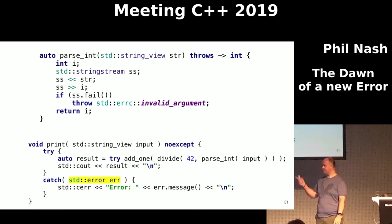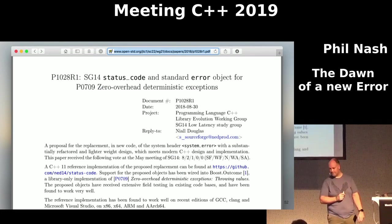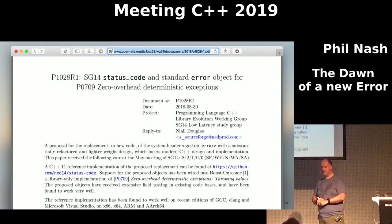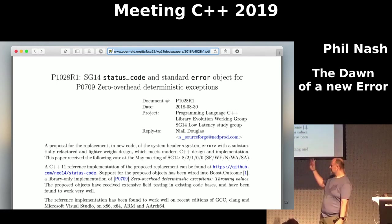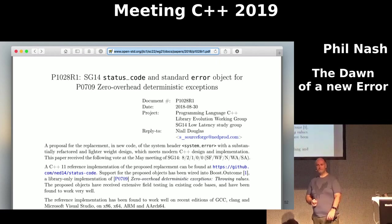Back to the interesting type here: std::error. I didn't really discuss this in my previous talk. What is it? It's another proposal: P1028, 'SG14 status code and standard error object for P0709.' It sounds like purely a supporting paper for the main one, but don't let that fool you — this actually stands on its own merits. Even if we don't get P0709, I really hope we get this.